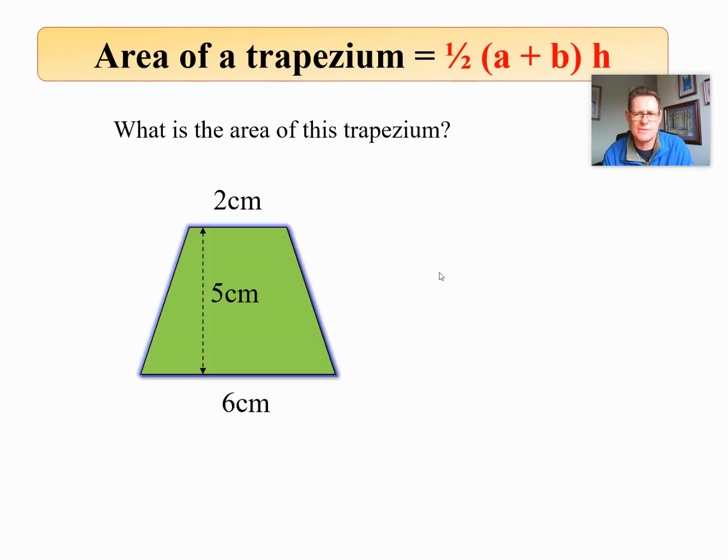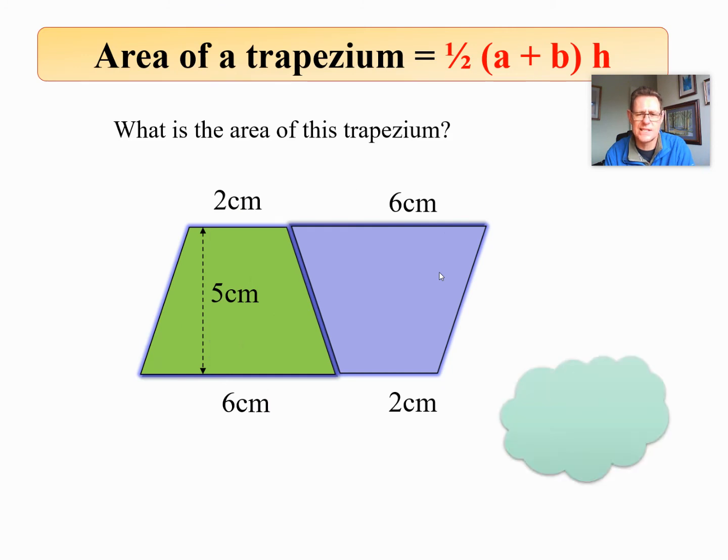OK, let's have a go at this one. If you want to pause the video, try it yourself. Here we go. We're going to flip it round, put the 2 down the bottom, 6 up the top. That makes the base 2 plus 6. So that's 8. We're going to times by the height of 5. 8 times 5 is 40. But don't forget, we want to halve it because there's only one of them. Half of 40 is 20, put centimeters squared on the end.